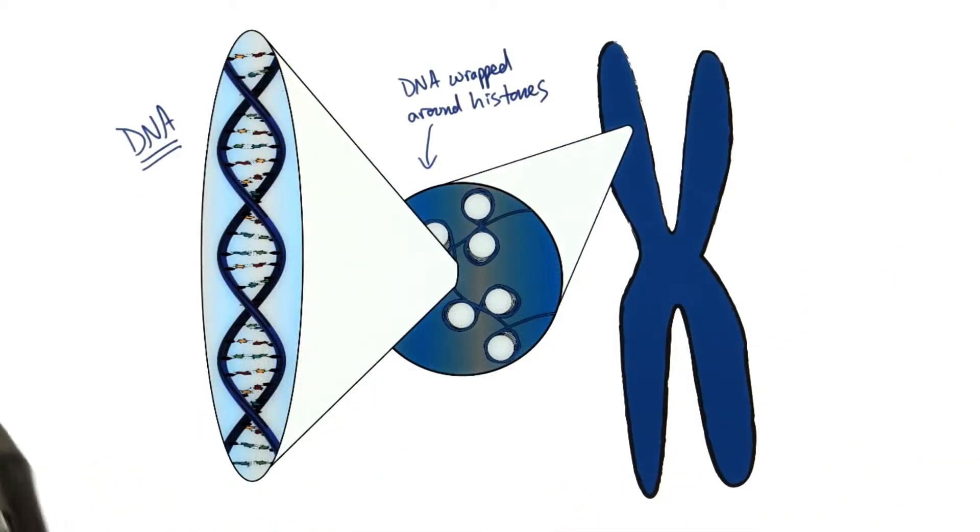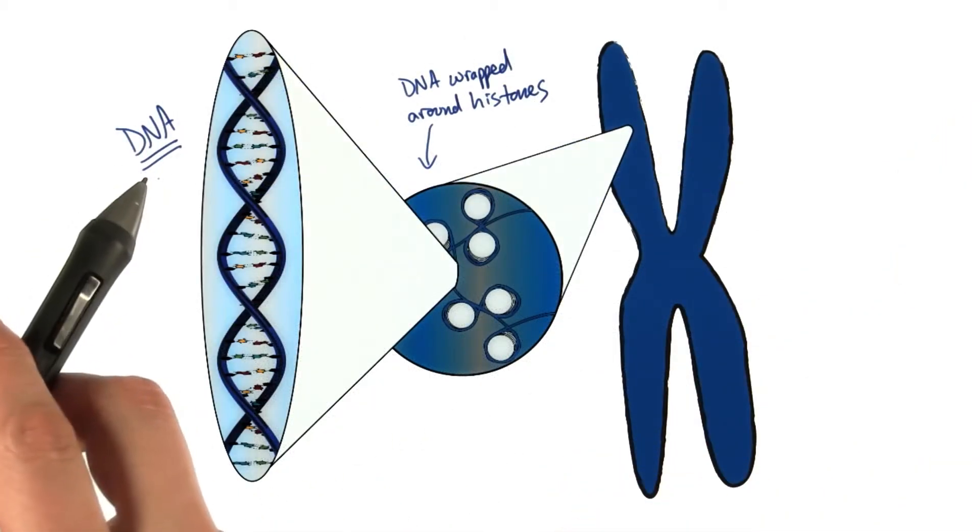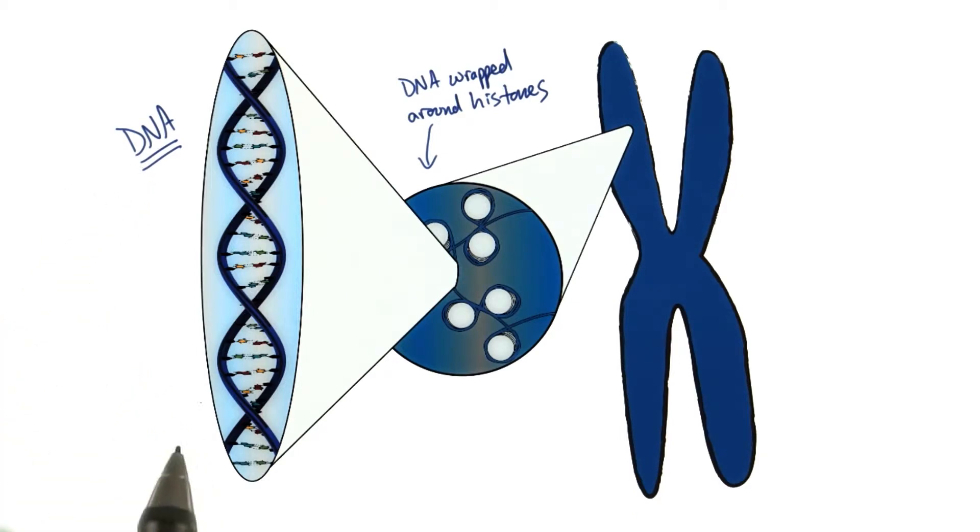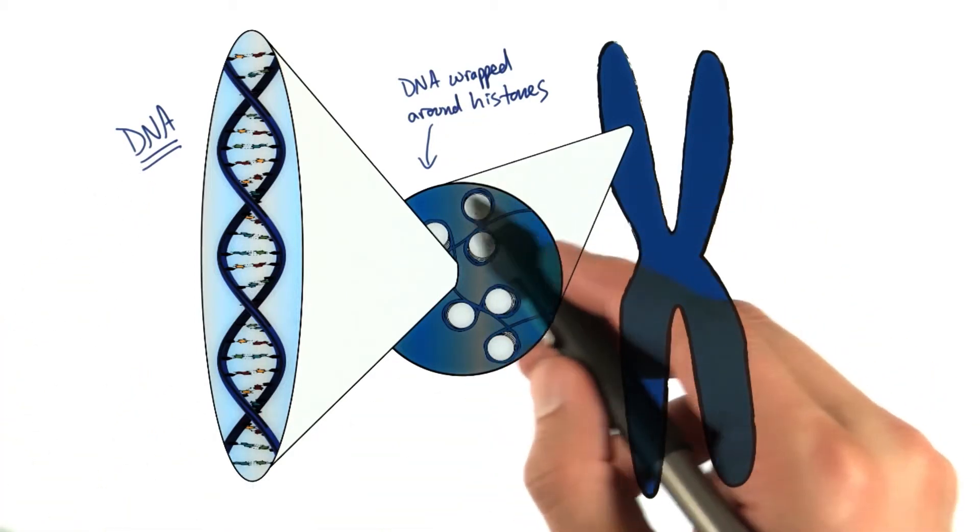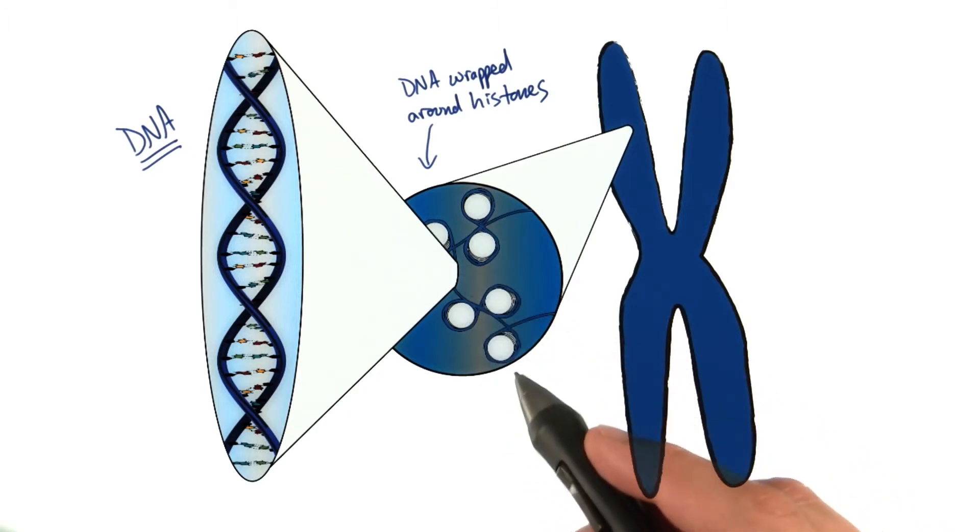So another way of looking at this is our double stranded DNA here, in our most zoomed in picture, is actually wrapped around these histone proteins in the 30 nanometer fiber structure.